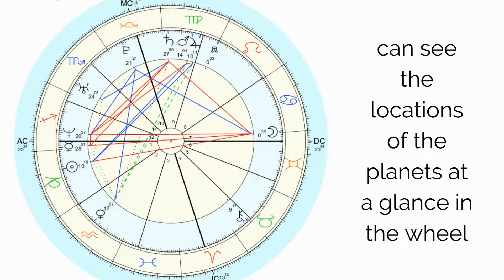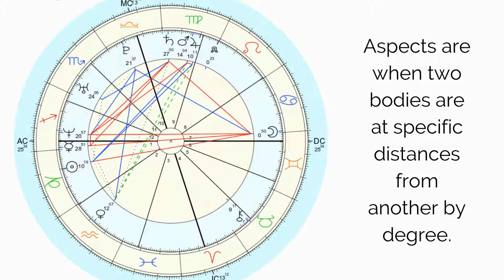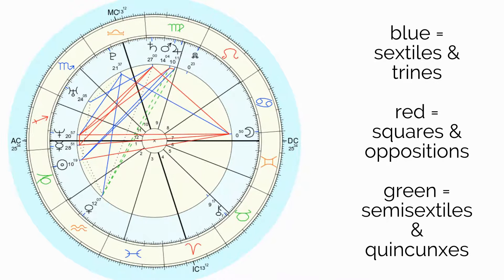In the wheel, there are blue, red, and green lines between the planets. These are for aspects. Aspects are when two bodies are at specific distances from one another by degree. Blue lines are sextiles and trines, red lines are squares and oppositions, and green lines are semi-sextiles and quincunxes.